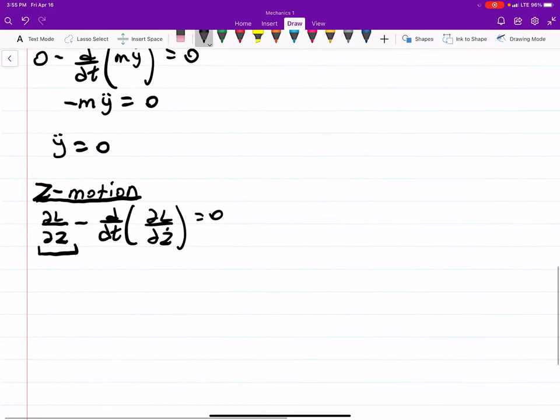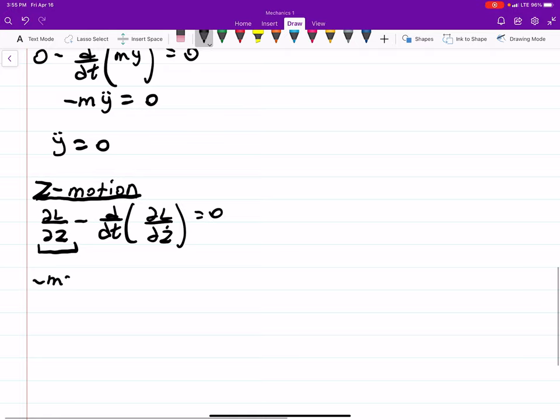Now notice that this derivative won't be zero because of this guy. So you're going to be left with a minus Mg. Minus Mg minus D by DT. MZ dot, just like before, equals zero.